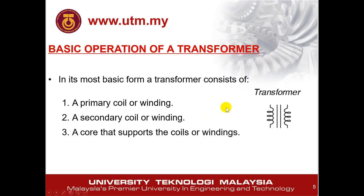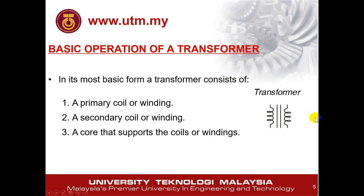There are different circuits when it comes to a transformer — it can be a minimum of two, usually input and output, or maybe more. For this class, we focus only on two sides: the primary side, which is usually on the left-hand side connected to the source, and the secondary coil or winding on the right-hand side. The secondary winding is connected to the load. At the center of it, there is a core.